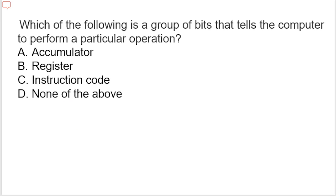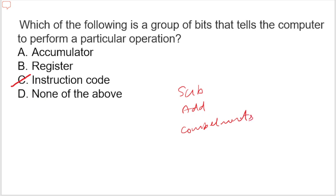Next question: which of the following is a group of bits that tells the computer to perform a particular operation? The answer is instruction code. Instruction code instructs the computer to perform operations such as subtraction, addition, and complement.